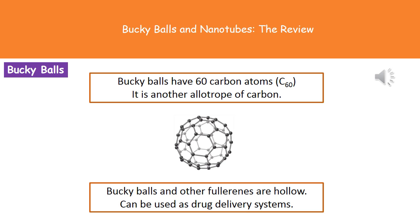You can see from the diagram in the middle that those 60 carbon atoms are arranged as a ball — as the name suggests. The key thing to remember is that it's a hollow ball, like a cage. It's actually a big enough cage to allow us to put things like atoms and drugs inside the fullerene cage itself, which means we can use it as a drug delivery system.